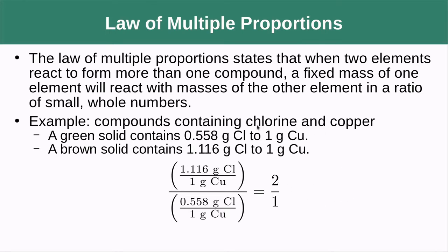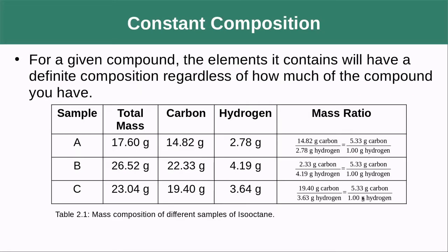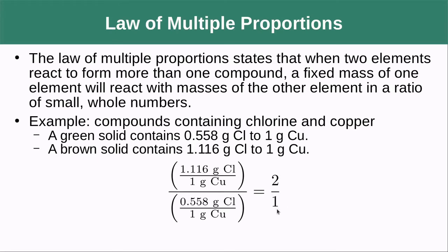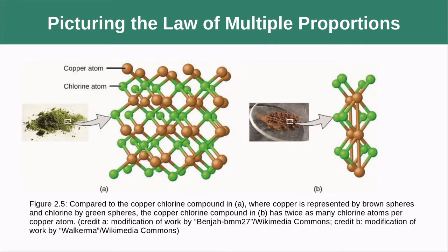If we have two different compounds both containing chlorine and copper — a green solid and a brown solid — and we take the ratios of chlorine to copper and then divide those two, we see that the brown solid has two chlorines for every one chlorine in the green solid. The brown solid has twice as many chlorines: two chlorines for every one copper, whereas the green solid has half as many chlorines.